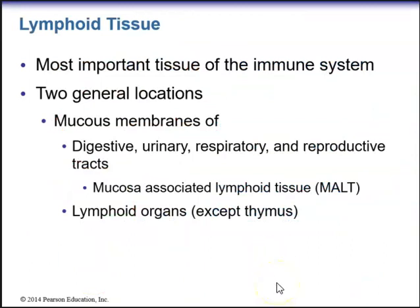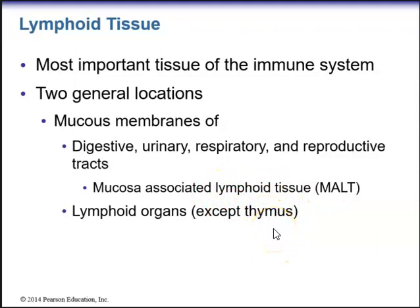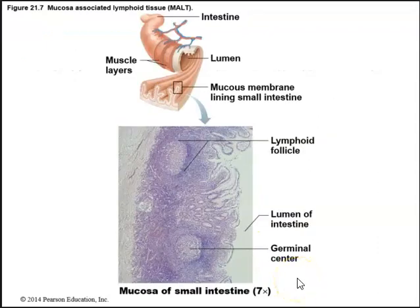Lymphoid tissue is the most important tissue of the immune system. There are two general locations of lymphoid tissue. Lymphoid tissue located in the mucous membranes of the digestive, urinary, respiratory, and reproductive tracts is called mucosa-associated lymphoid tissue, or MALT. Lymphoid tissue is also found in the mucous membranes of the lymphoid organs, except for the thymus, which is a primary lymphoid organ.